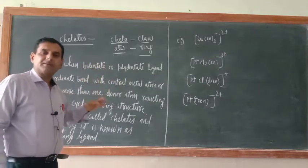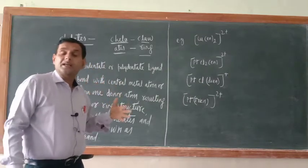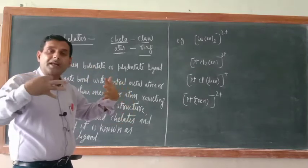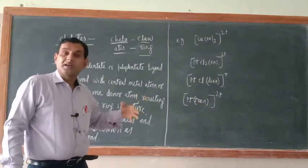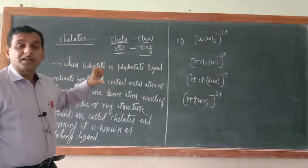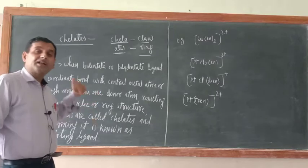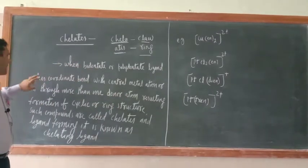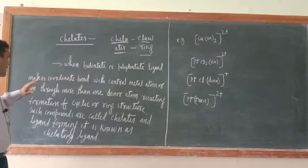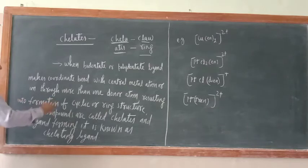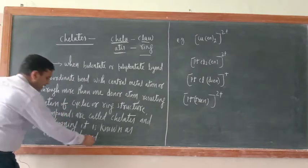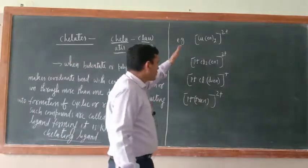So chelates are coordinate compounds in which a bidentate or polydentate ligand forms coordinate bonds with the central metal atom through more than one donor atom, resulting in the formation of a cyclic or ring structure. Such compounds are called chelates and the ligand forming it is known as chelating ligand. Examples include Cu(en)₂²⁺, PtCl₂(en), [Pt(dien)Cl]⁺, and [Pt(trien)]²⁺.